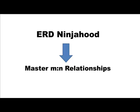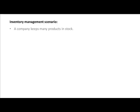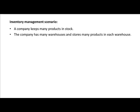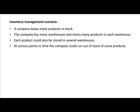One-to-one and one-to-many relationships are fairly straightforward. It is in many-to-many relationships that all the intricacies of entity relationship diagramming and database design lie. Let's look at an inventory management scenario: a company keeps many products in stock, has many warehouses, and stores many products in each warehouse. Each product could also be in several warehouses — one product in many warehouses, one warehouse contains many products. That's the typical many-to-many relationship.